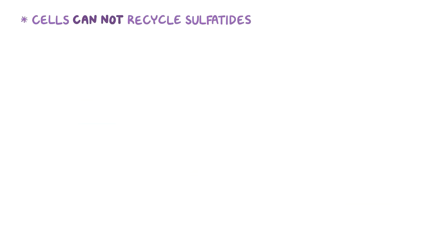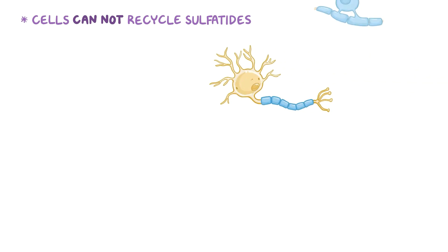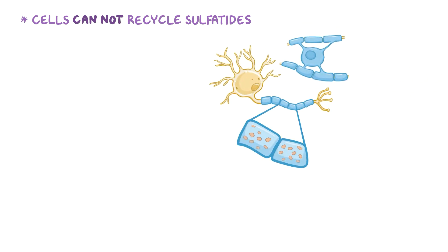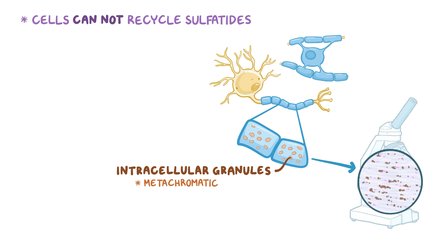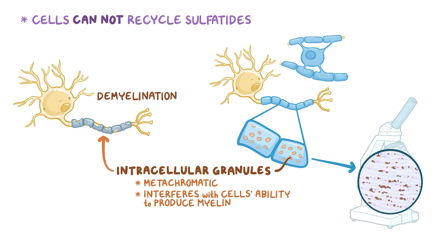Without arylsulfatase A, cells can't recycle sulfatides. Sulfatide accumulates within cells of the nervous system, like Schwann cells and oligodendrocytes, and aggregates to form intracellular granules. These sulfatide aggregates are called metachromatic, since they appear differently colored from the cellular material when stained and seen under the microscope. Sulfatide granules interfere with the cell's ability to produce myelin, resulting in demyelination, or loss of the myelin sheath of the neurons, and the end result is impaired nerve impulse transmission.